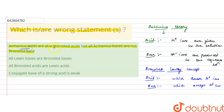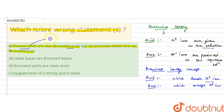Now reading the first statement: Arrhenius acids are also Bronsted acids. An Arrhenius acid produces H⁺ ions in aqueous solution, and according to Bronsted-Lowry concept, an acid donates H⁺ ions. So it is true that Arrhenius acids can also be Bronsted acids, because they are giving or donating H⁺ ions to the solution.